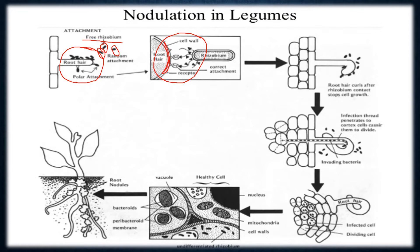Rhizobium come in contact with the root hair, produce an infection thread, and migrate toward the cortical region, making a compartment or small space within a cellular membrane with a high percentage of vacuolation. Root hairs have lectins — carbohydrate-binding proteins — at their margins.